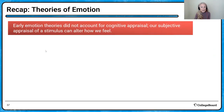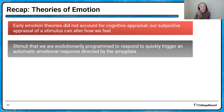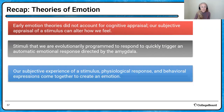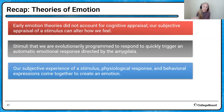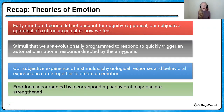To recap: early emotion theories did not account for cognitive appraisal. There are certain stimuli that are evolutionarily programmed to respond to quickly — the low road. Our subjective experience, how we respond to the stimulus, our expressions, our culture, and our cognitive appraisal all come together to create emotion. Emotions accompanied by a corresponding behavioral response, like smiling or crying, are going to be strengthened.